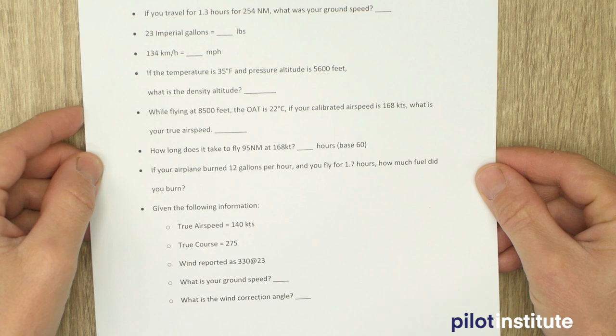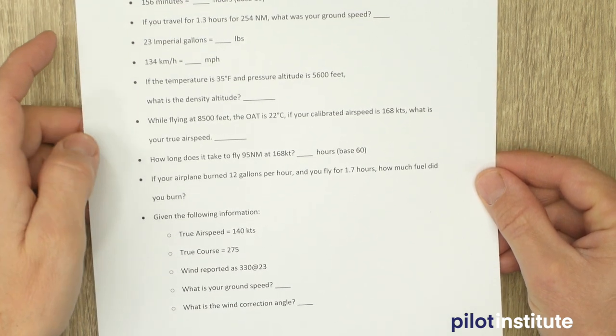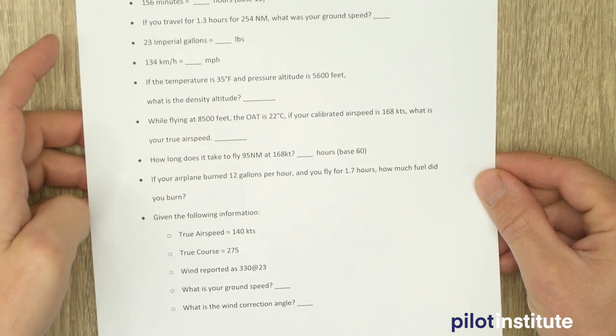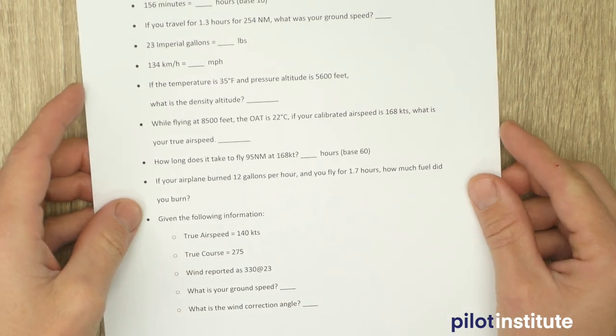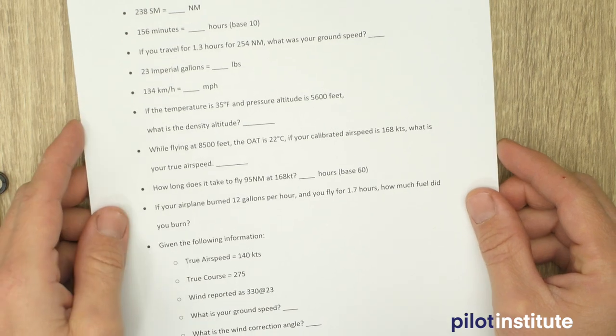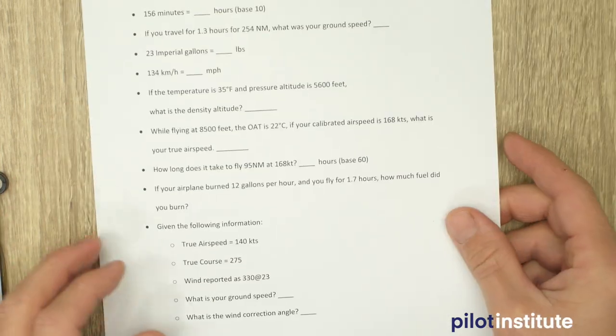It's a mix of conversions, we're going to do density altitude stuff, we're going to do true airspeed stuff, basically everything that you would do with an E6B and with a CX-3. So I have these in here, we're going to start the timer, and we're going to get started.